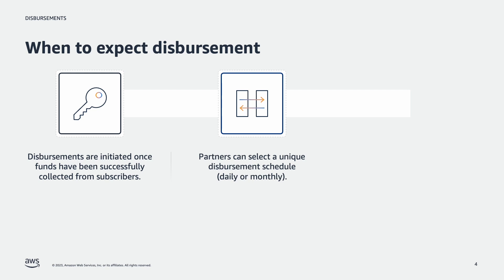If an ISV or CP selects the monthly option, they can select the day of the month they want to receive their disbursements. If a seller has selected the monthly disbursement preference and selected the 15th as the day of the month, then all invoice payments collected prior to the 15th will be received by the partner in that month's cycle. If the partner has selected daily disbursement, the disbursement will happen daily if there is any outstanding payment to be dispersed to the partner.